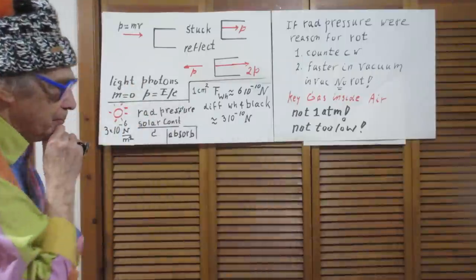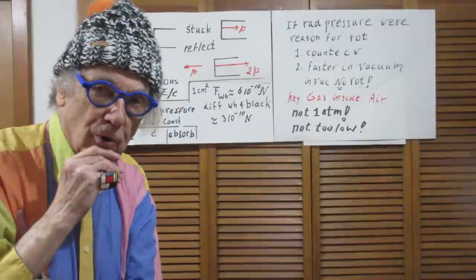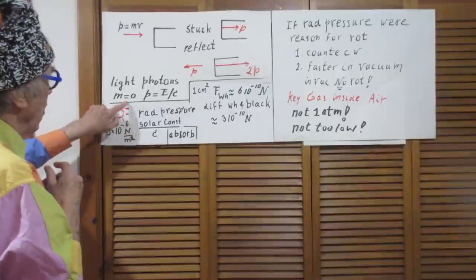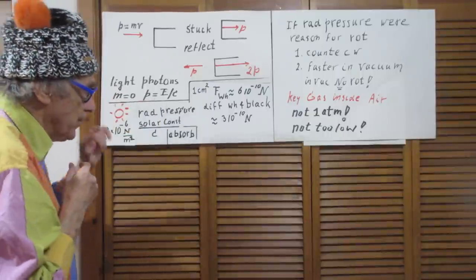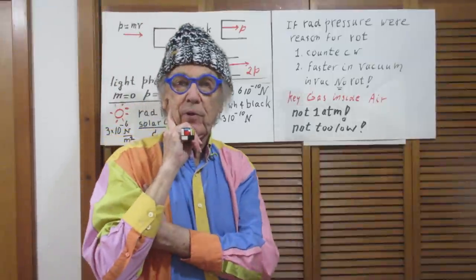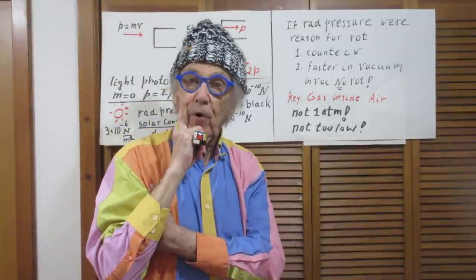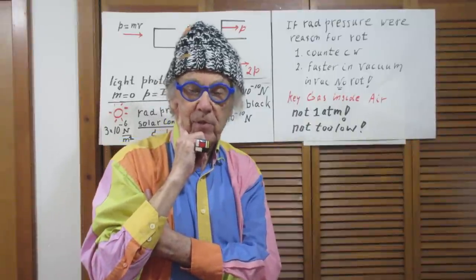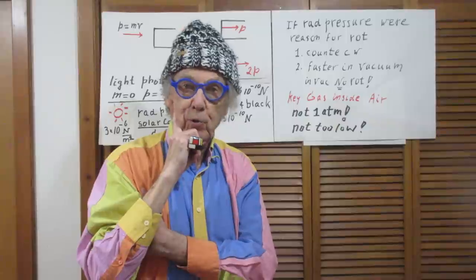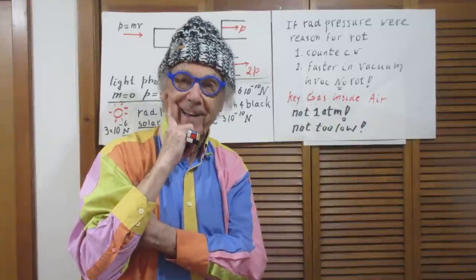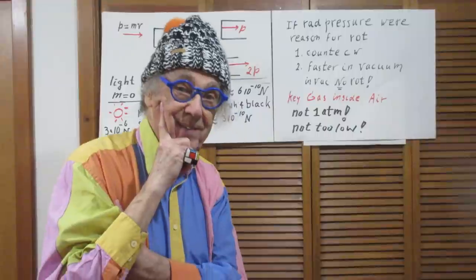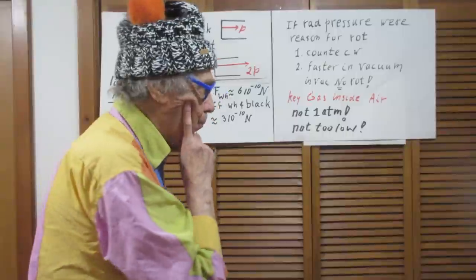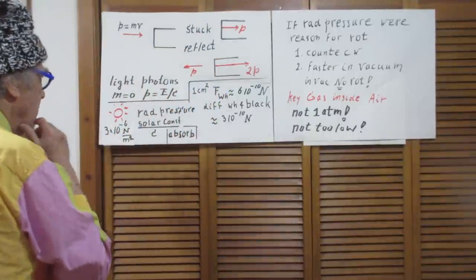Light consists of photons. Photons have no mass, so m is zero, but they do have momentum. The momentum of a photon is the energy of the photon divided by the speed of light. If you don't remember that, use Google and you will find it again. So yes, photons — electromagnetic waves — have momentum: energy divided by c.